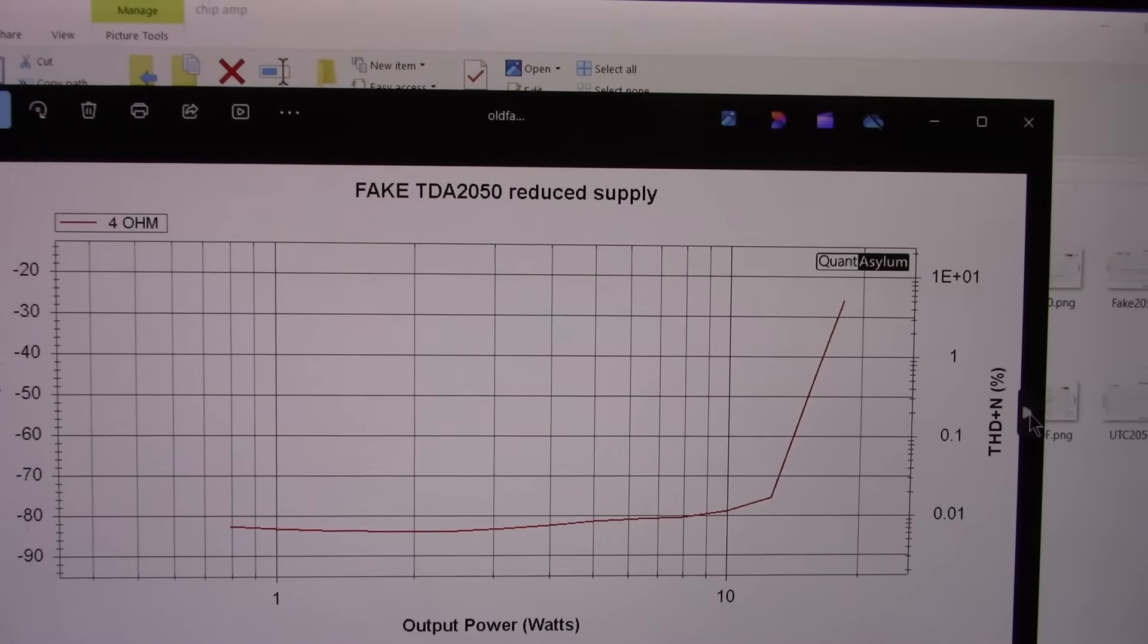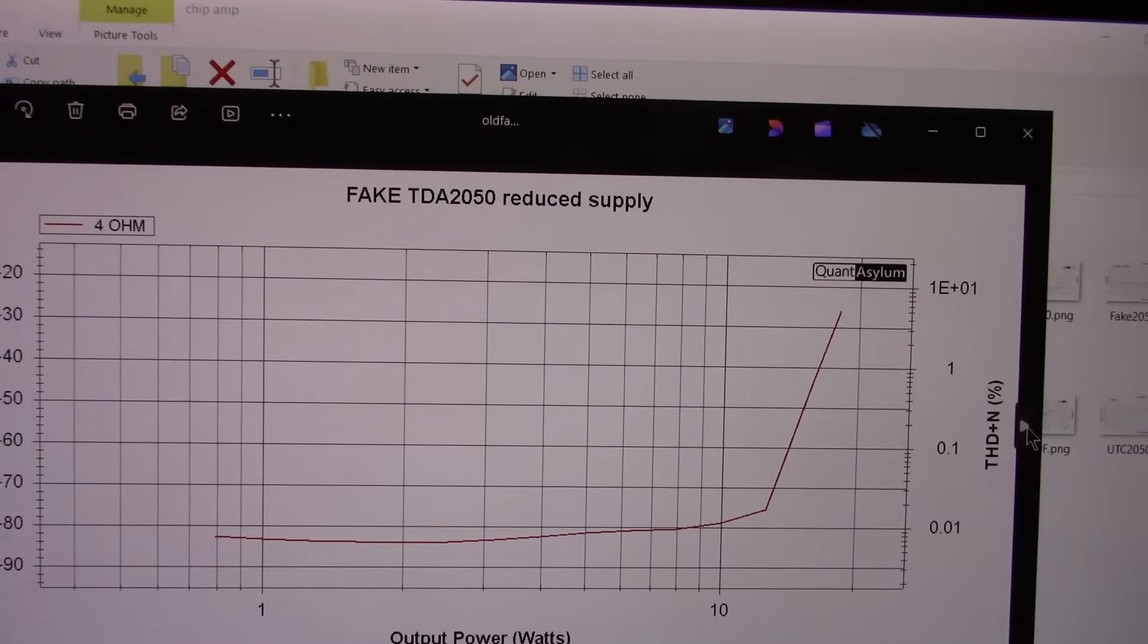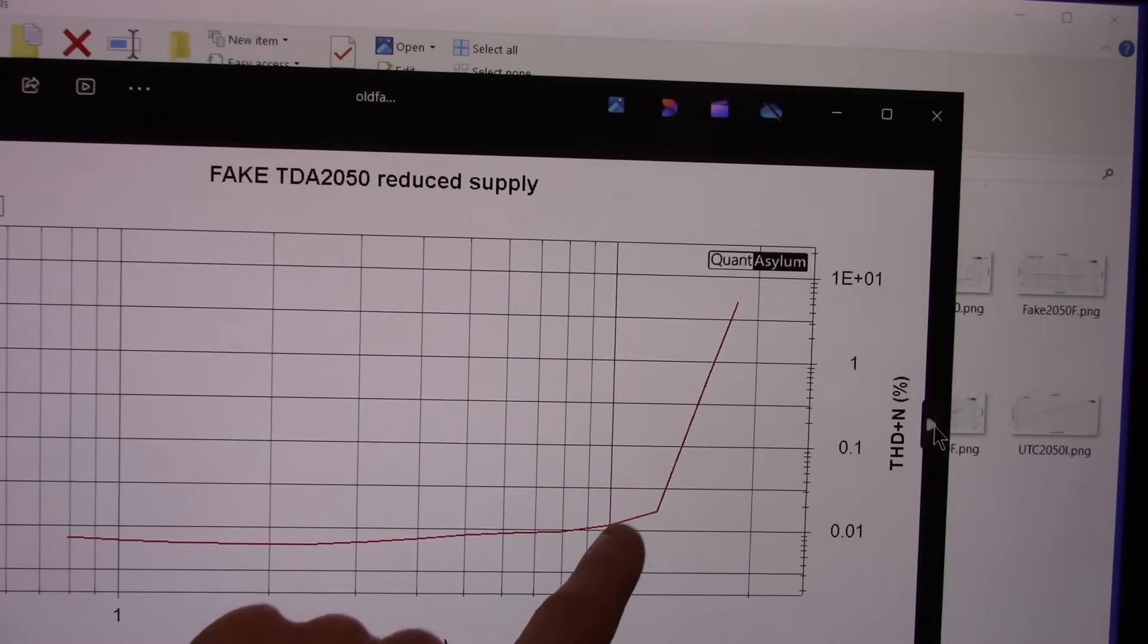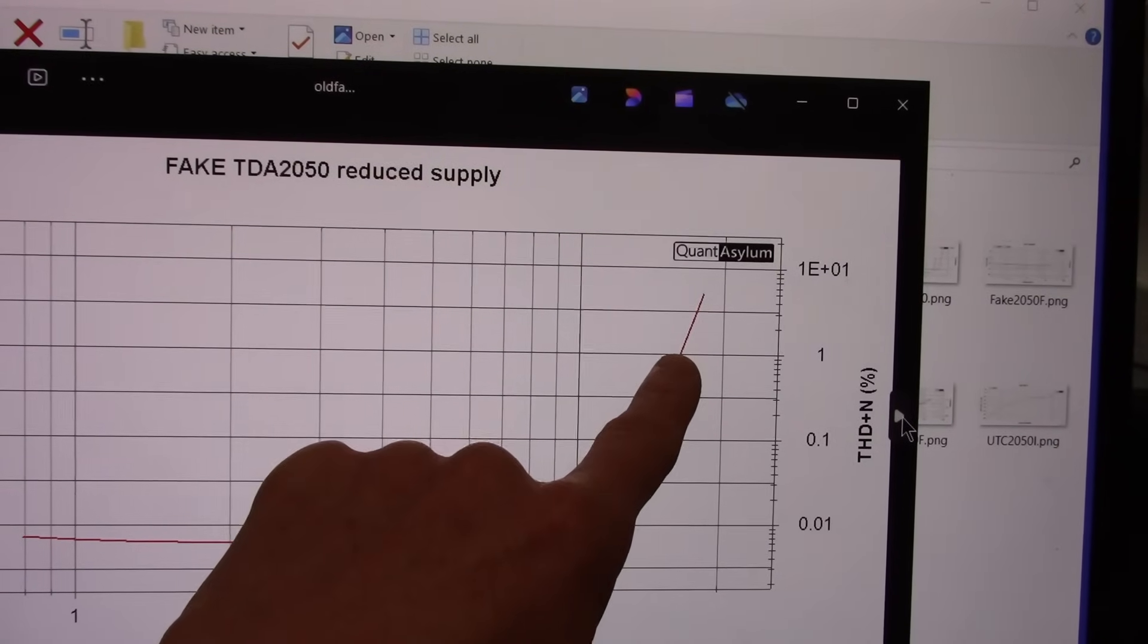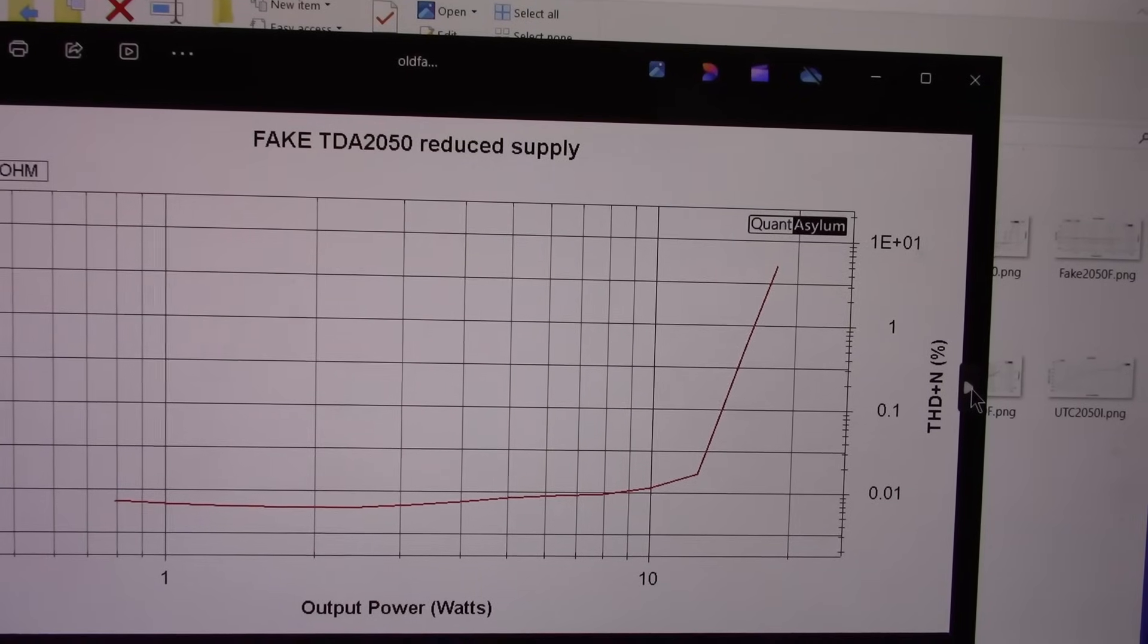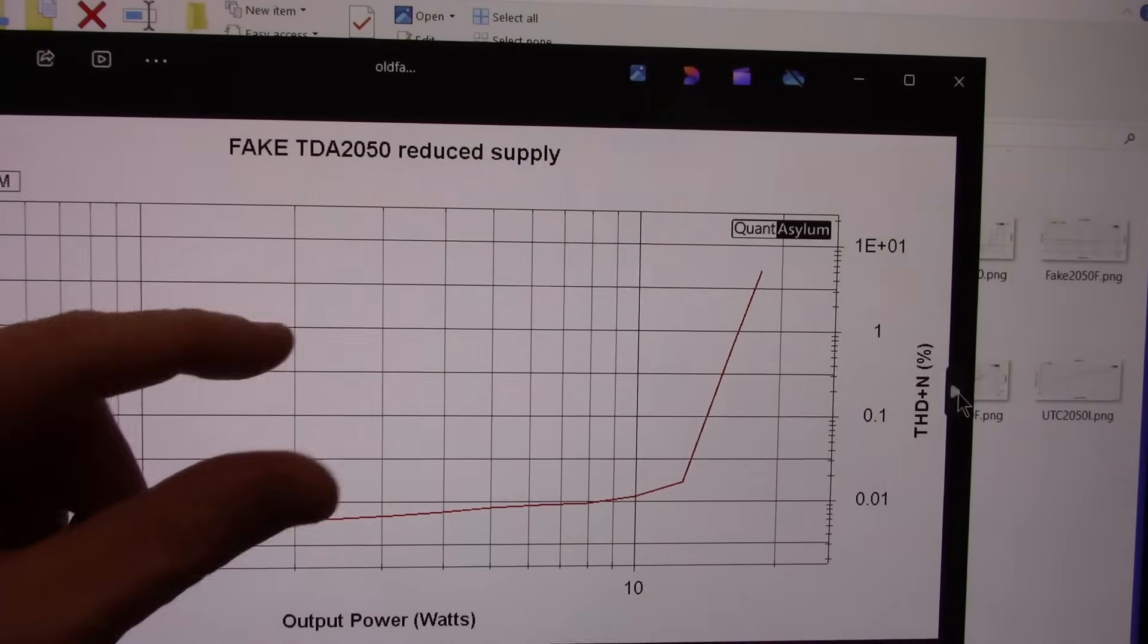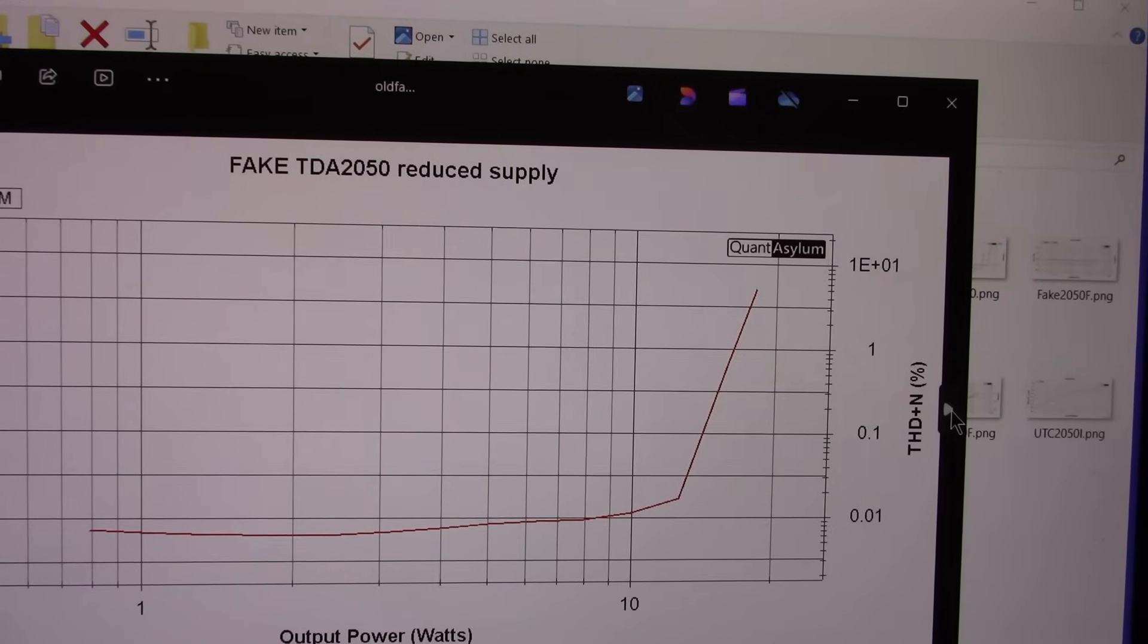So I did another test with the fake TDA2050 and I lowered the supply voltage to 30 volts. In other words, a split supply of plus or minus 15, and with the 4 ohm load, yeah, now it's not wigging out like it did before. So we're crossing the point one line at probably 14 watts and 16 watts at the 1% line. So it seems to have some sort of current limit when you're running it at such a high supply voltage. You're going to get a lot more thermal dissipation. It might be a thermal type limiting going on. When I crack the chip open, they use a much smaller die size than the authentic chips. So you're going to run into thermal issues a lot quicker. So I'm guessing that's what's going on.